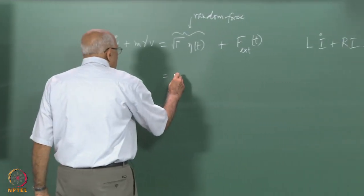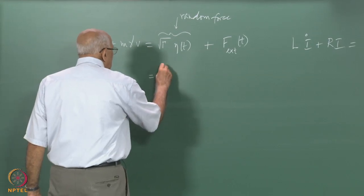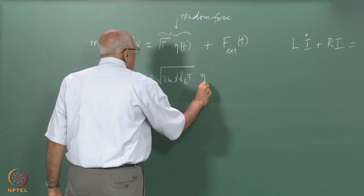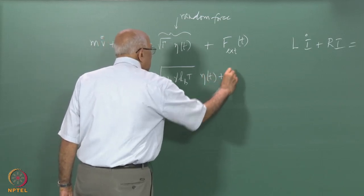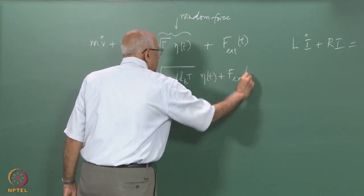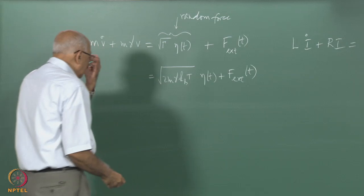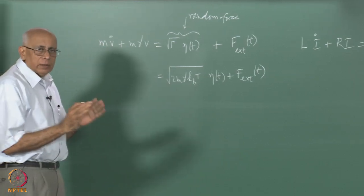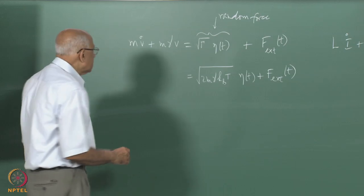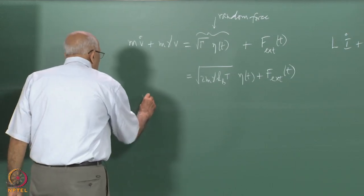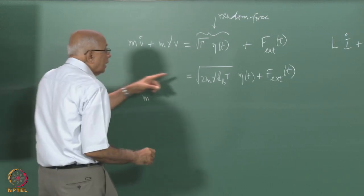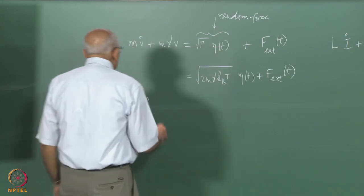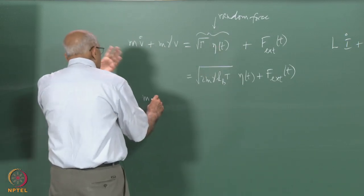This turned out to be square root of 2mγk_B T times η(t) plus f_external(t). If you took statistical averages, this becomes m times ⟨V⟩_dot, because the average value of η is zero.